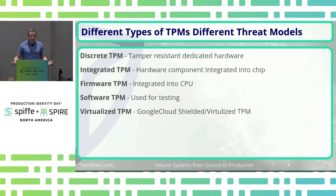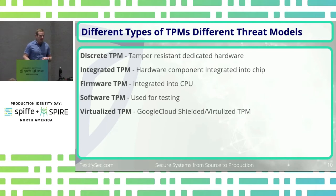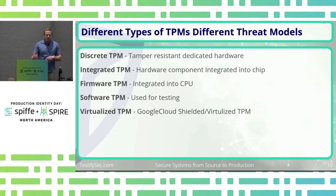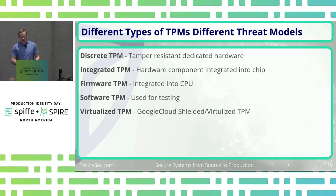There's a software TPM — don't ever use these unless you're testing, there's really no use to actually secure an environment. And then there's a virtualized TPM. If you're running your builds in the cloud, Google actually gives us a shielded virtual machine that includes a virtualized TPM with some proofs about how secure that is. VMware and QEMU also offer TPMs.